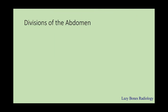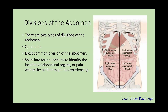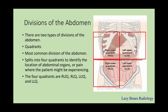Now let's move on to the divisions of the abdomen. Now that we've reviewed the abdominal organs, we'll be covering the two ways the abdomen is subdivided to be studied or evaluated. First, we have the quadrants — the most common division of the abdomen. This splits the abdomen into four quadrants to identify the location of abdominal organs or the pain the patient might be experiencing. These include the right upper quadrant, right lower quadrant, left upper quadrant, and left lower quadrant. If someone has pain in their right lower quadrant, you can identify which organs are within there — for example, if someone had an appendix about to burst, they'll have right lower quadrant pain.